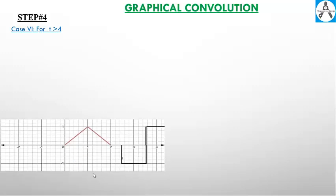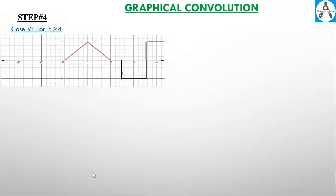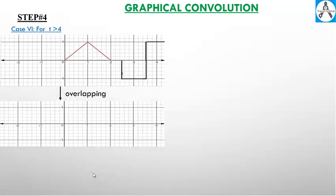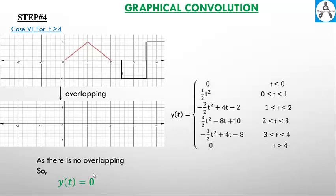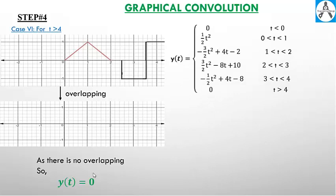The final case, case six: for t greater than four. As there is no overlapping, y of t is equal to zero. Now we have a complete output.